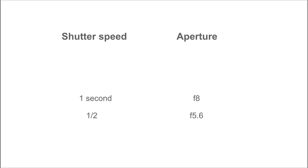However, the silver halides in film react differently with very long exposures, resulting in fainter images. This is called reciprocity failure.